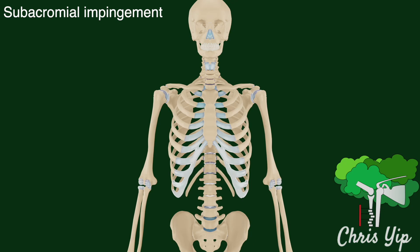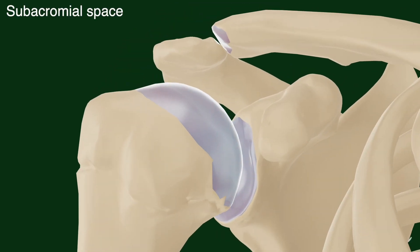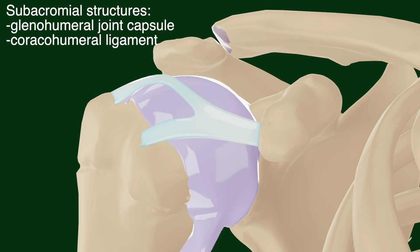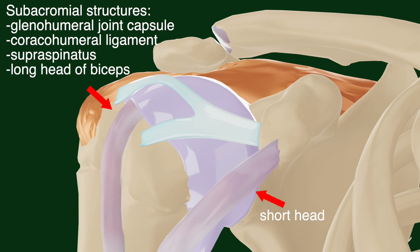This video introduces the pathologies leading to the subacromial impingement of the shoulder. The subacromial space is bordered superiorly by the acromion and inferiorly by the proximal humeral head. Structures in this space include the glenohumeral joint capsule, the coracohumeral ligament, the supraspinatus muscle, and the long head of the biceps.